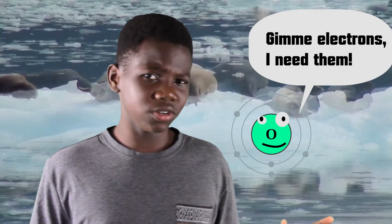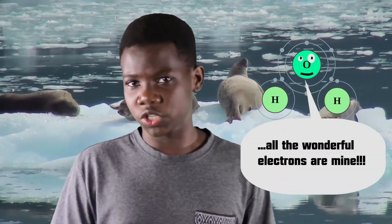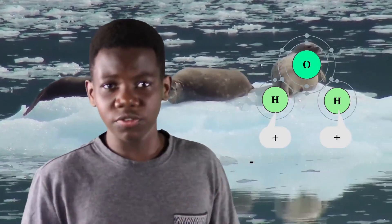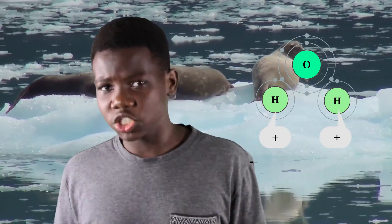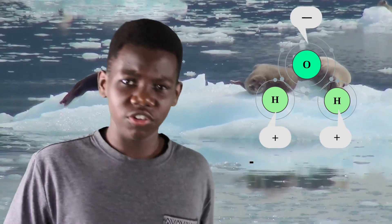To tackle why water expands as it freezes and why it behaves differently under 40 degrees, understand that atoms want a certain number of electrons. Oxygen wants 10, and by itself it has 8. Since it's so close to being full, it will do anything just to get some electrons. So when it bonds to two hydrogen atoms purely for their electrons, it hogs all the electrons from them. This makes the hydrogen all positive — it just got robbed of its electrons — and makes the oxygen negative because it got all of the electrons.